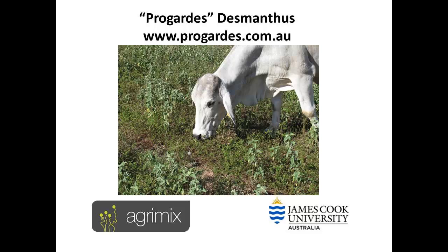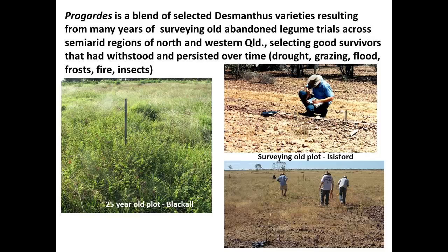I'll now spend a minute talking about the new variety that has been released, called Progardes. Progardes is a blend of selected varieties of Desmanthus resulting from many years of surveying old abandoned legume trials across semi-arid regions of north and western Queensland. The best survivors that had withstood and persisted over time were selected — they had come through droughts, grazing, flood, frost, fire, and various insect attacks. The image on the bottom left is from around Blackall, a plot now 25 years old, and the image on the right is from an old plot around Isisford on a pebbly Gidgee soil.